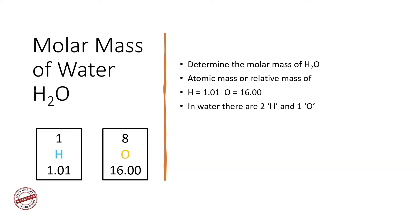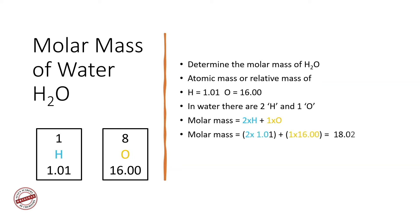In water there are two hydrogen atoms and one oxygen atom. The molar mass is equal to the sum of the relative atomic masses of the different elements in the molecule. So we multiply the relative atomic mass of hydrogen by 2 and oxygen by 1. The molar mass equals 2 × 1.01 + 1 × 16.00, which equals 18.02 grams per mole.